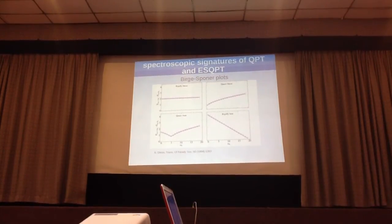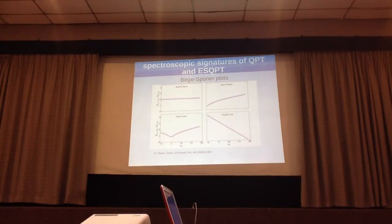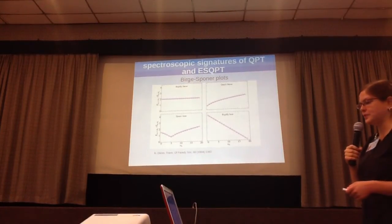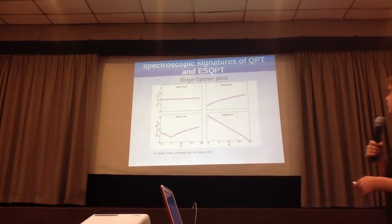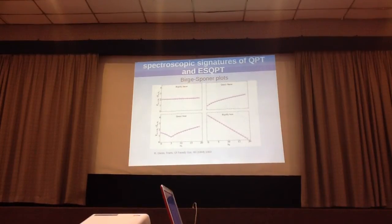The first thing we look at is the very famous Birge-Sponer plots. This is a plot of the difference of energy between neighboring modes as a function of the vibrational quantum number. On the top left, you see what would happen for an individual in the isomerization. First, we're going to consider a harmonic spectrum where the energy difference for every level is constant.